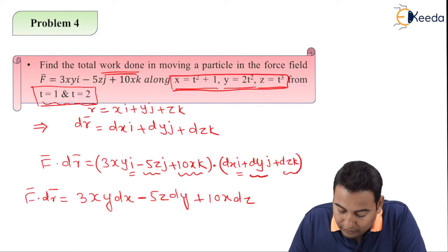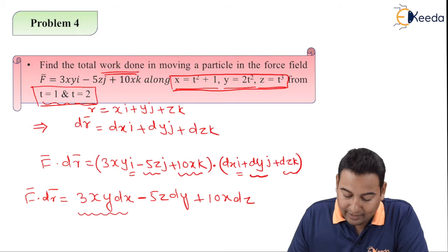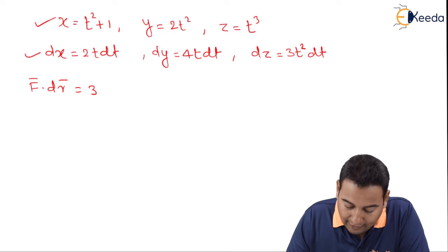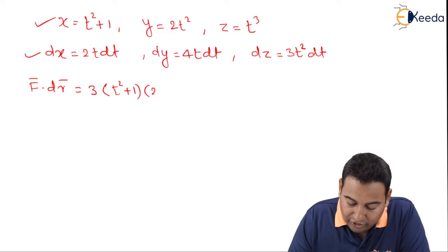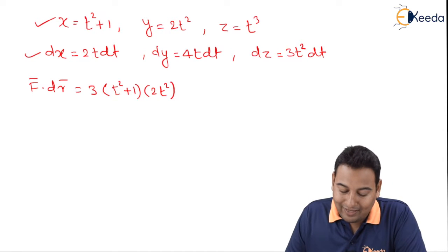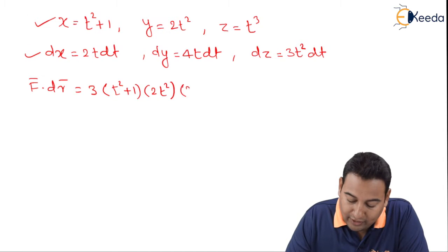In the first we have 3xy dx. 3x, x is t square plus 1, y is 2t square into dx and dx is 2t dt.